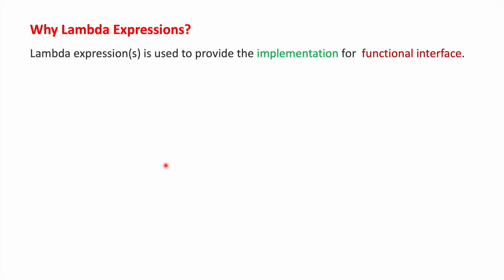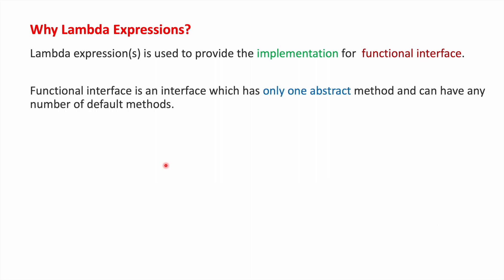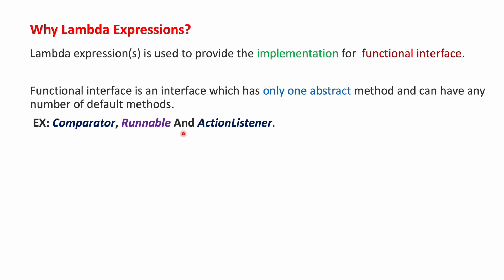Lambda expressions are introduced to provide implementation for functional interfaces in an easy way. A functional interface is an interface which has only one abstract method and can have any number of default methods. We have predefined functional interfaces: Comparator, Runnable, and ActionListener. The Comparator interface has a compare method which is its abstract method.